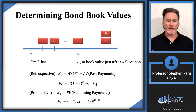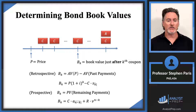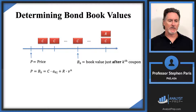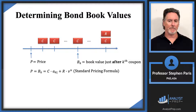If I specifically look at the prospective calculation of the book value at time zero, that's just the price — the present value of all the payments. That will be C times a-angle-n plus R times v^n. This is what I'm going to refer to as the standard pricing formula.